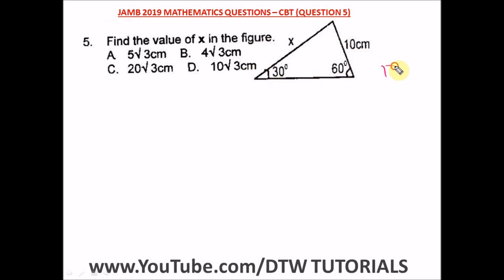is 180, right? And from here we have 30 plus 60 which is 90, and when you subtract 90 from 180 you are left with 90. So it means that